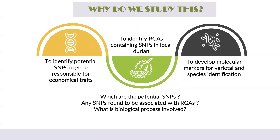So why do we study this? The genomic information of durian and local cultivars is not fully studied, hence we should start the work. We have three objectives: first, to identify potential SNPs in genes responsible for economical traits; second, to identify resistant gene analogues containing SNPs in local durian; and third, to develop molecular markers for varietal and species identification.